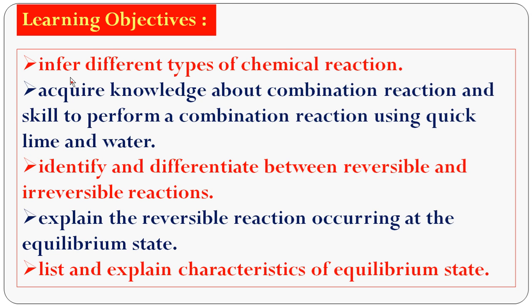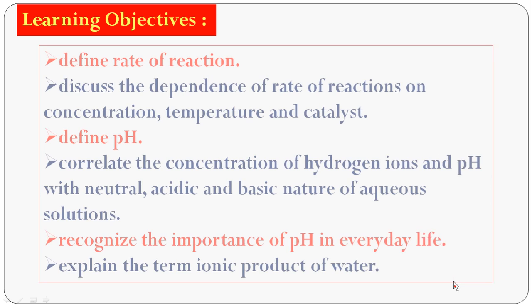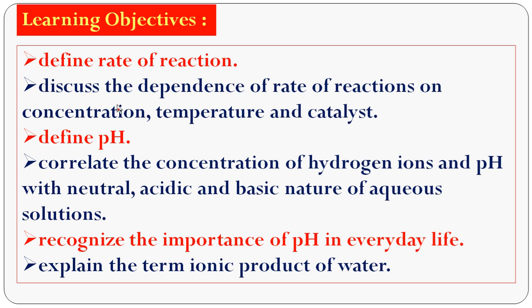What are the learning objectives? To infer the different types of chemical reactions. To acquire knowledge about combination reaction and the skill to perform a combination reaction using quicklime and water — calcium oxide CaO and water — to form calcium hydroxide, which is used for whitewashing. To identify and differentiate between reversible and irreversible reactions. To explain the reversible reaction occurring at the equilibrium state, and to list and explain the characteristics of equilibrium state. To define the rate of reaction, or speed of reaction, and to discuss the dependence of speed of reaction on concentration, temperature, and catalyst.